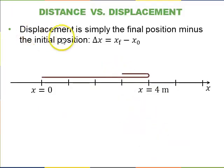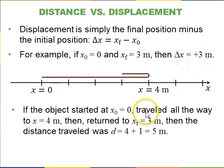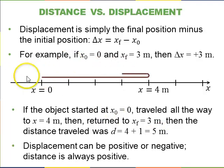Distance is a little different. Displacement is just simple, delta x is x final minus x initial. So for example, if your path starts at x equals 0, goes all the way to x equals 4 and returns back to 3 meters, then the displacement is just your final, which is plus 3, minus your initial. So that's just plus 3. However, your distance that you traveled is you went to the 4 and then back to the 1, so the distance is 4 plus 1 is 5 meters. So displacement can be positive or negative depending on whether you end up to the right or to the left of your starting position, and distance is always positive.